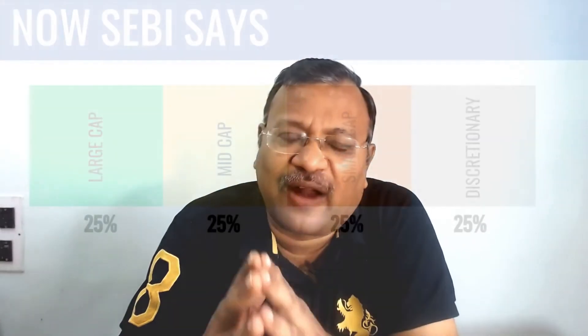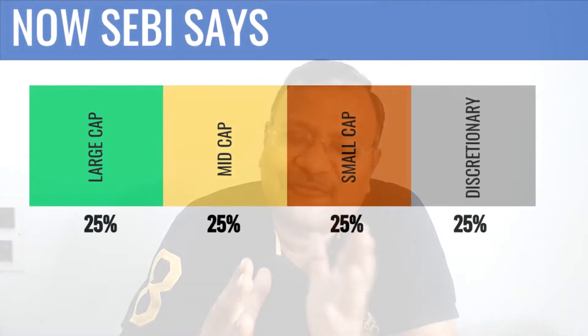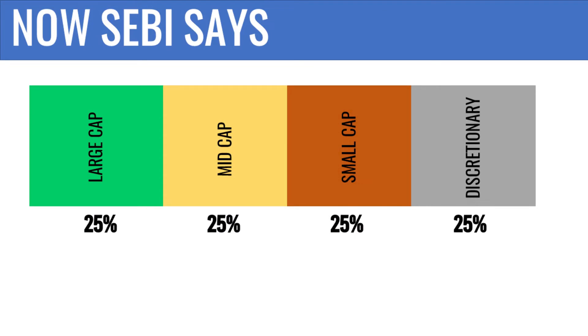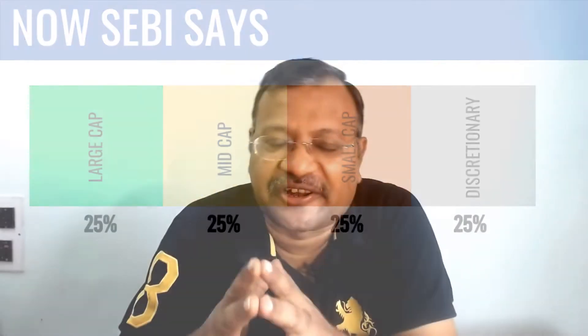To curb this practice, SEBI came out with the circular on September 11, 2020, saying that a multi-cap fund will now have to mandatorily invest 25 percent of its assets in large cap, 25 percent in mid cap, and 25 percent in small cap stocks, with the balance 25 percent being discretionary.